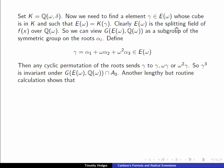Clearly E(ω) is the splitting field of f over ℚ(ω). So we can view the Galois group of this extension as a subgroup of the symmetric group on the roots. And if we define γ to be α₁ + ωα₂ + ω²α₃, then any cyclic permutation, the cyclic permutations of the roots send γ to γ, ωγ, and ω²γ respectively.